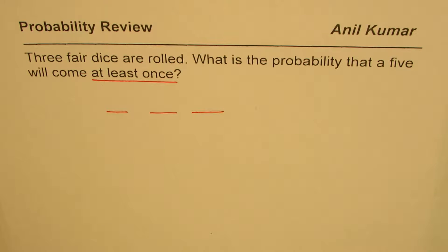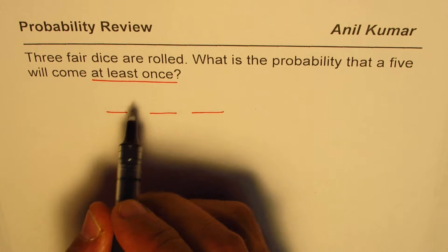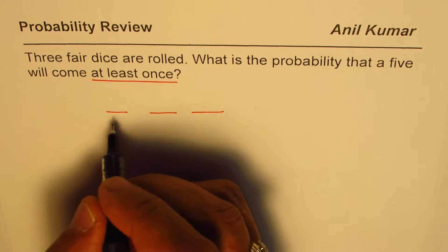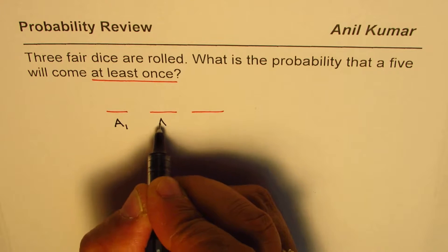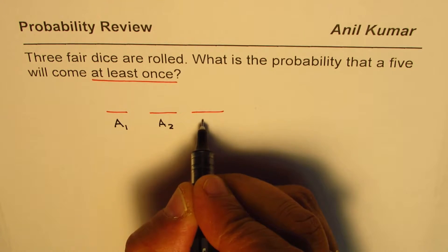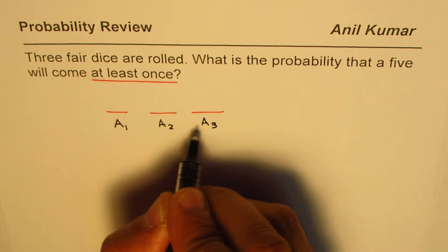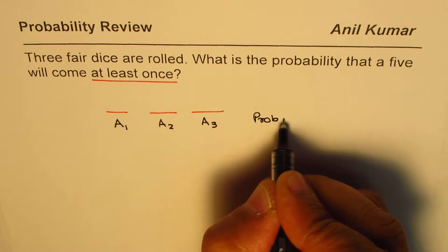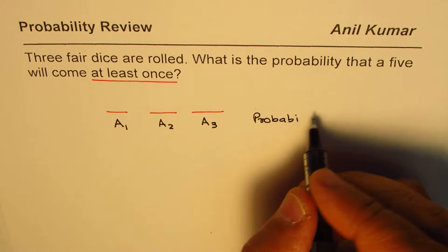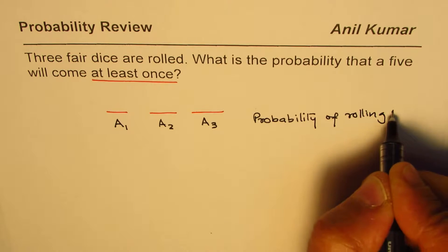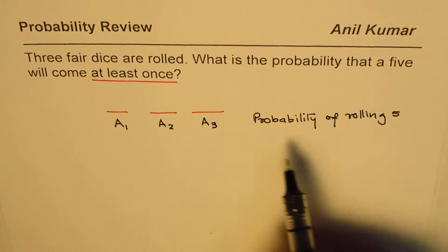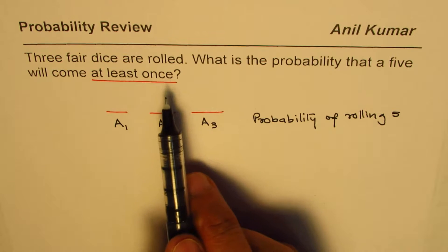You can pause the video, answer the question, and then look into my suggestions. Now, let us say the probability of getting five on the first die is A1, on the second die is A2, and on the third die is A3. That is the probability of rolling five on each die.